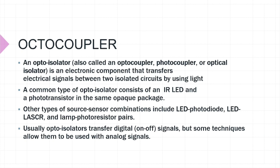This four-pin IC that you are seeing is known as an optocoupler, or it is also called an optical isolator. As the name suggests, it is simply an electronic component that transfers the electrical signal between two isolated circuits by means of light — or to be more specific, with the help of IR radiation.